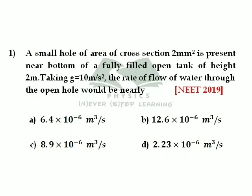A small hole of area of cross section 2 mm square is present near the bottom of a fully filled open tank of height 2 meters. Taking g equal to 10 meters per second square, the rate of flow of water through the open hole would be nearly.